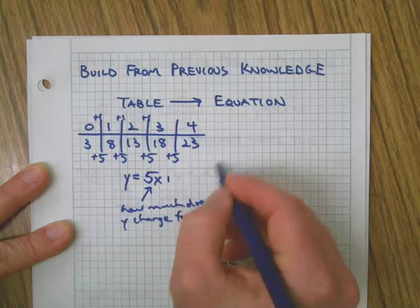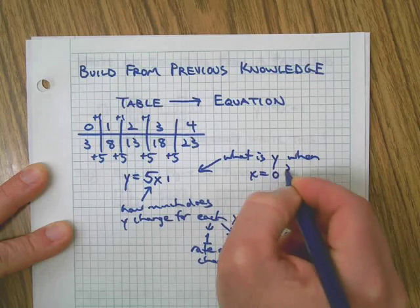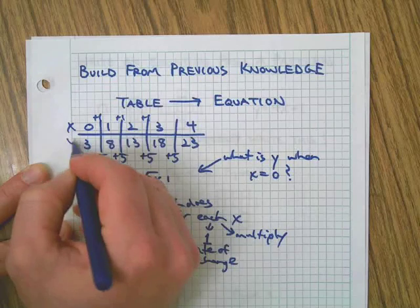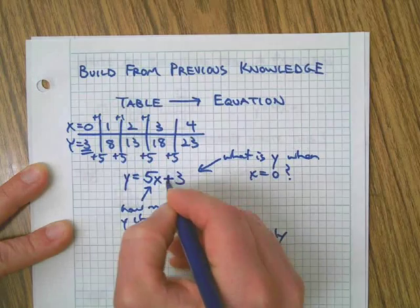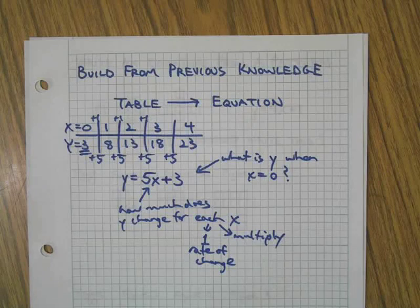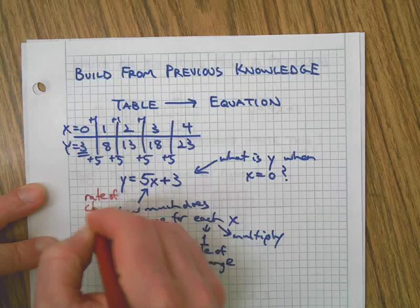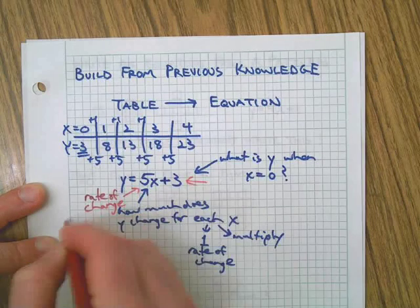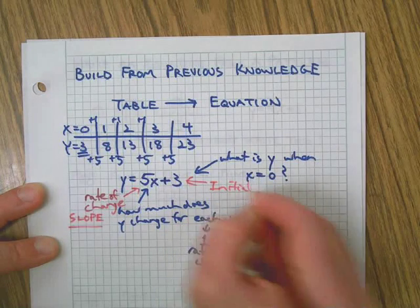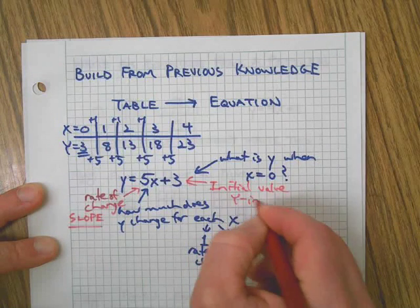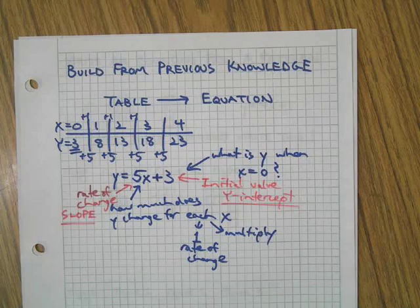And then we need to answer the question what is y when x equals zero? Since tables are always xy, there's x zero, there's y is three. Three goes there including whatever sign is with it. In this case it's positive. And there we go. So the key words here are rate of change which is also called slope later on. And over here initial value also known as the y-intercept.